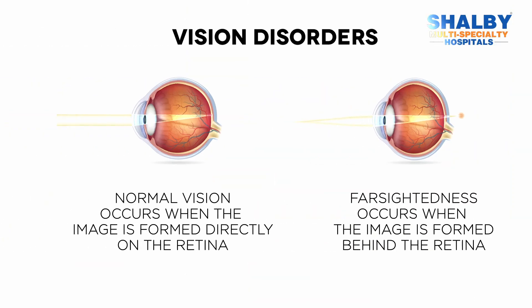For any abnormality in the cornea, the lens, or the eyeball, if the rays are not falling on the retina, that will lead to eye issues. What happens in hyperopia is the eyeball is smaller, or we can say the light is projected behind the retina. So when the light is coming from far away, it passes through the cornea and through the lens but does not fall on the retina — it falls behind the retina. That's why you cannot see objects clearly.